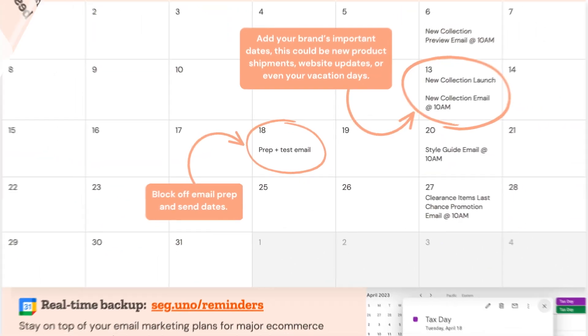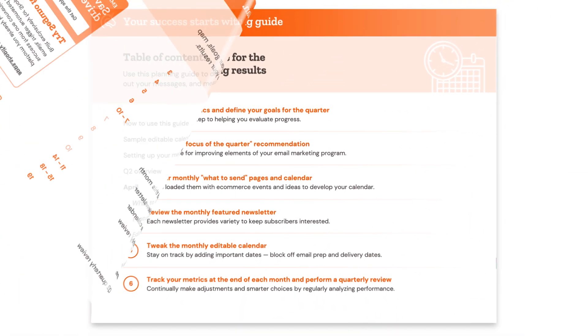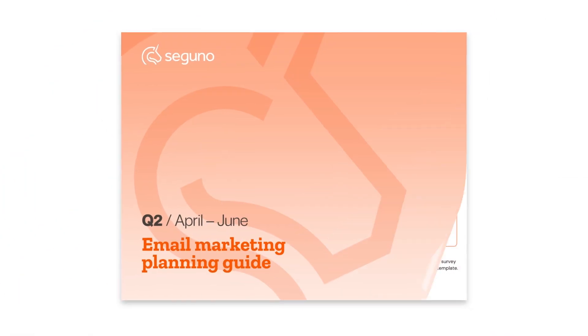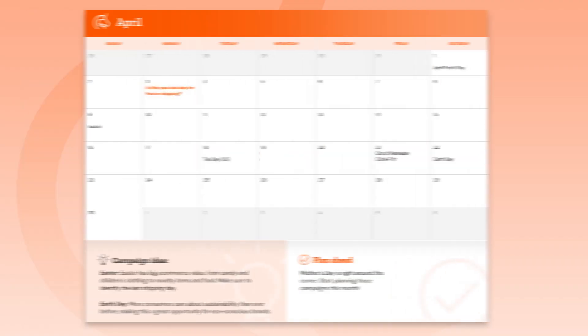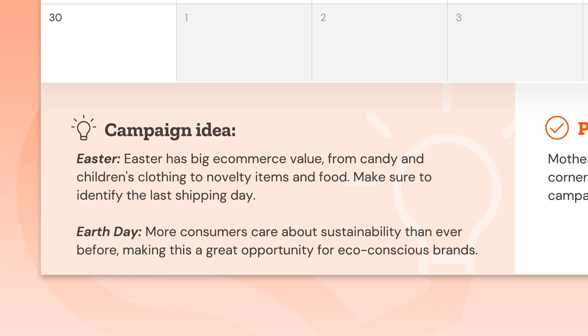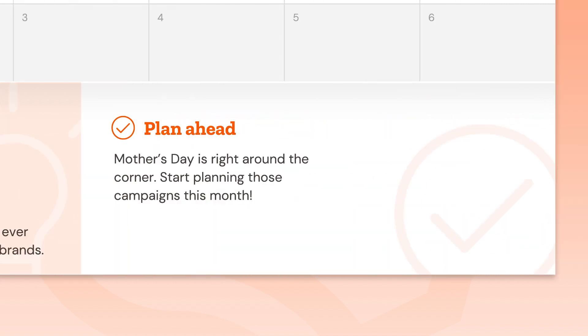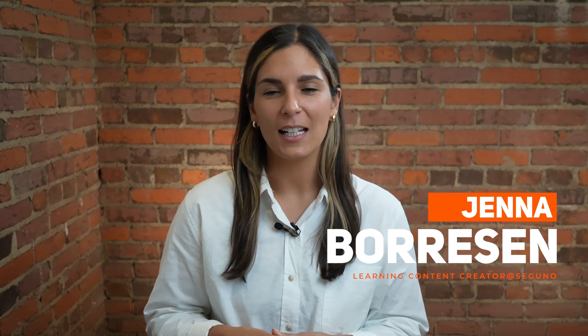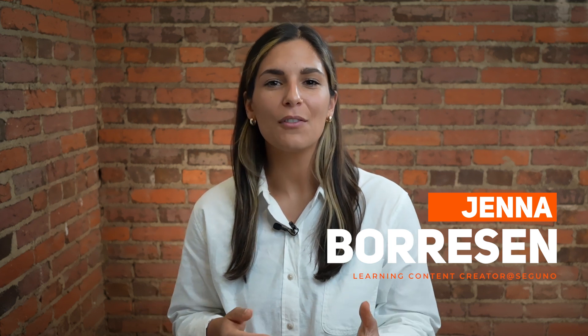Seguno's quarterly planning guide offers all the suggestions and tactics a Shopify store needs to develop a robust email calendar. This tool is fully customizable and filled with timely content ideas and tips on email strategy. In this video, we will cover the main sections of the guide and how you can leverage it for your business.